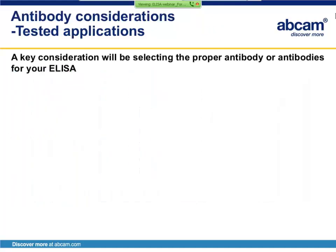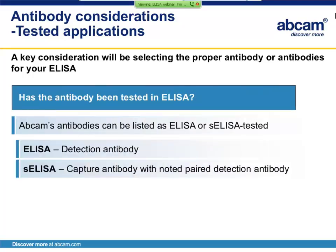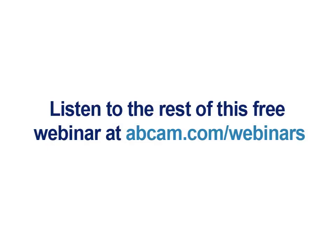Of course, antibodies are a key reagent when developing an ELISA assay. One thing to consider is if the antibody has been previously tested to work in an ELISA format. For example, Abcam will list antibodies as tested via ELISA or sandwich ELISA. ELISA refers to the use of the antibody as a detection reagent, and sandwich ELISA indicates the antibody has been used as a capture antibody in a sandwich ELISA assay.